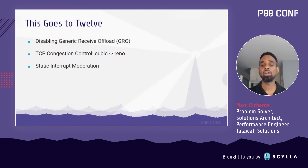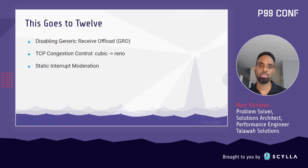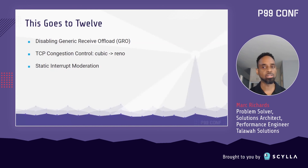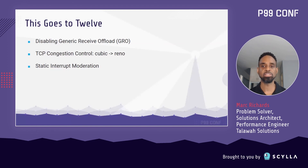TCP congestion control is used to optimize the flow of data across the network. This is really important for unreliable networks like the internet, but a lot less important within our cluster placement group. I had an idea: maybe I should find the congestion control algorithm that has the lowest overhead in a congestion-free environment. As it turned out, switching from cubic — which is the default — to Reno, which is the simplest algorithm, results in a small but consistent performance increase.